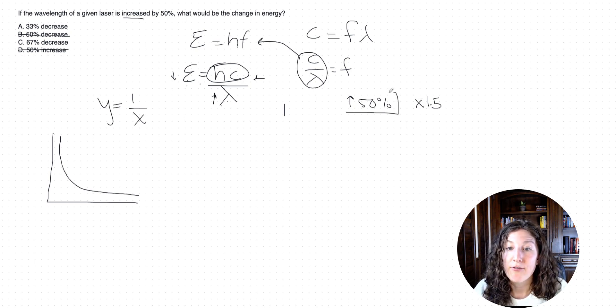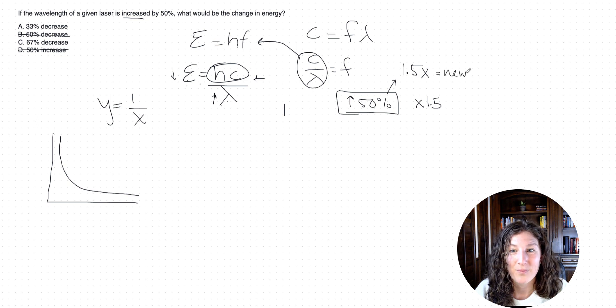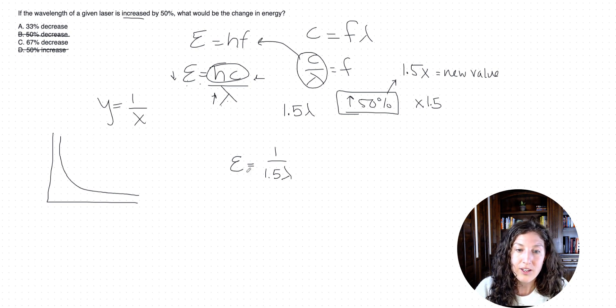So whenever you see a 50% increase on the MCAT, I want you to think, okay, that means I'm multiplying this value, the original value, by 1.5 to get the new value. So that means that our new wavelength is 1.5 of our original wavelength lambda here. So now let's go ahead and plug that into our equation with substituting Planck's constant and the speed of light as just 1 for right now as a placeholder. So we've got 1 over 1.5 lambda.